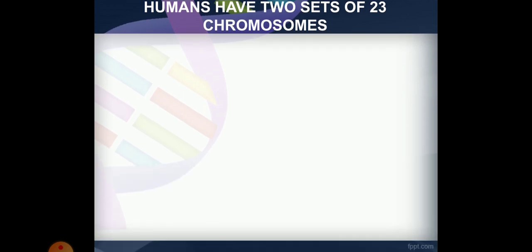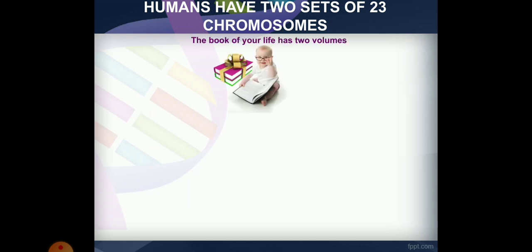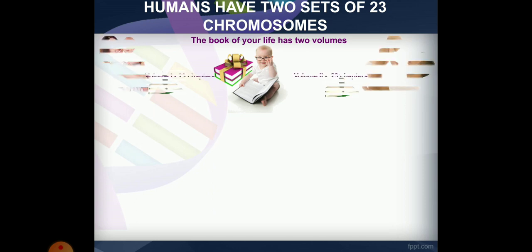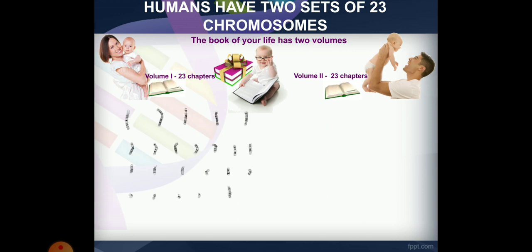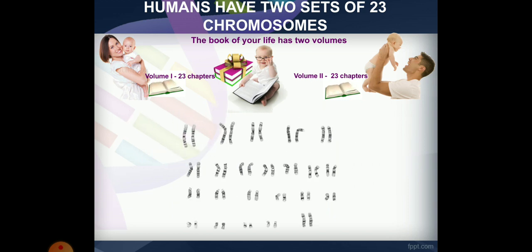There are two sets of chromosomes. There are 23 chromosomes in each set, giving 46 total. Think of it like two volumes of a book — each volume has 23 chromosomes, so together we have 46 chromosomes.